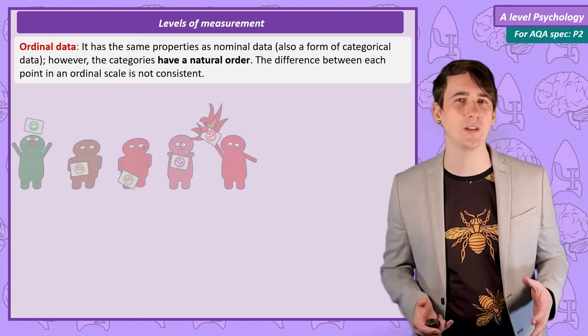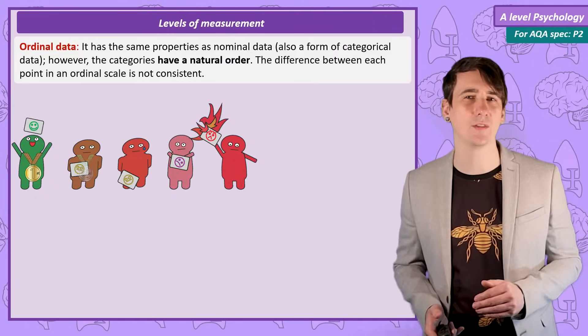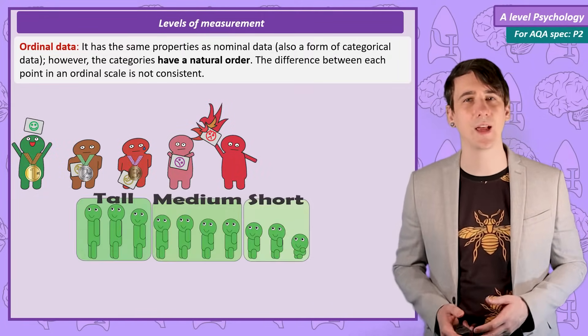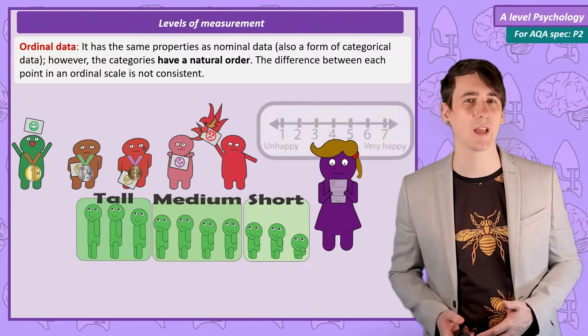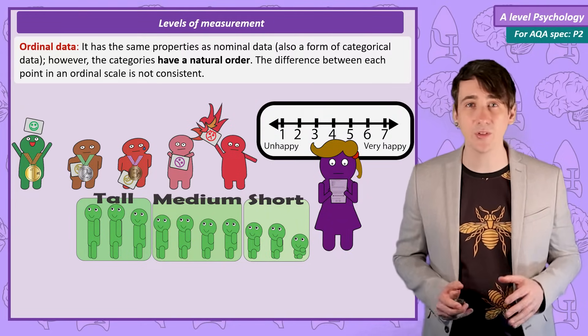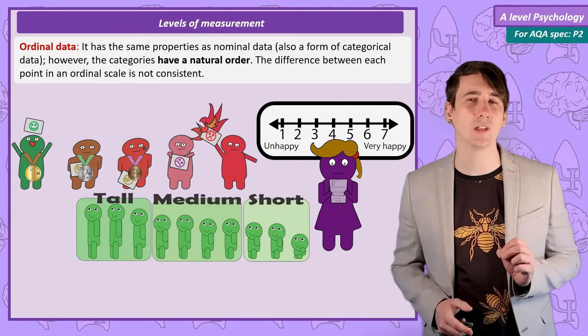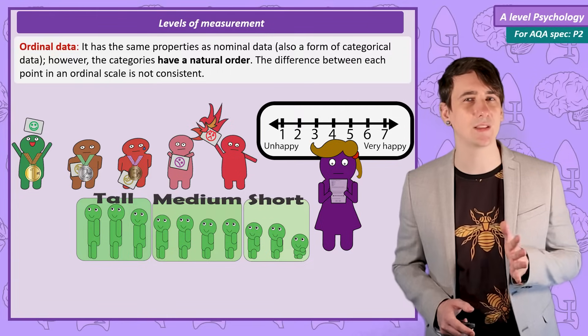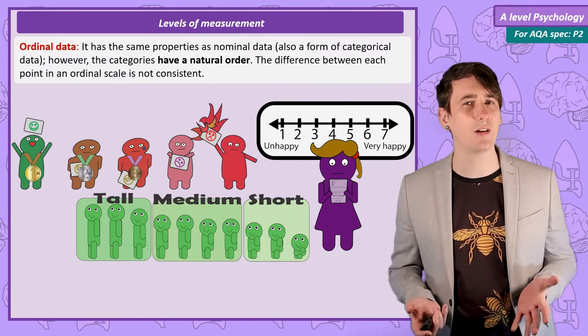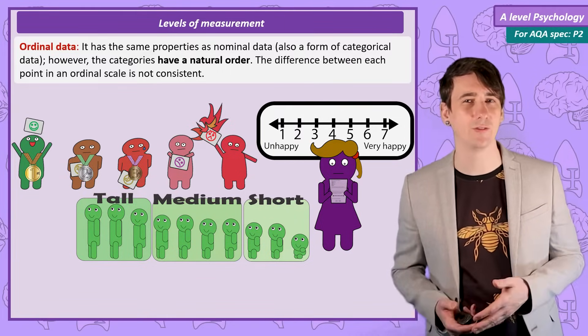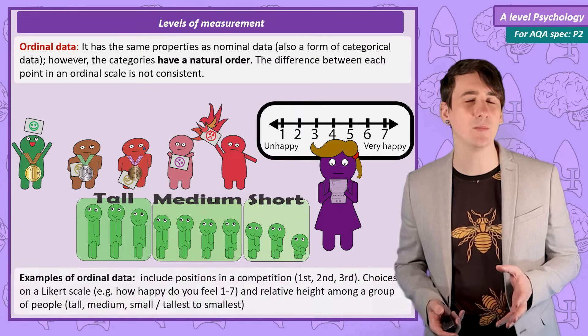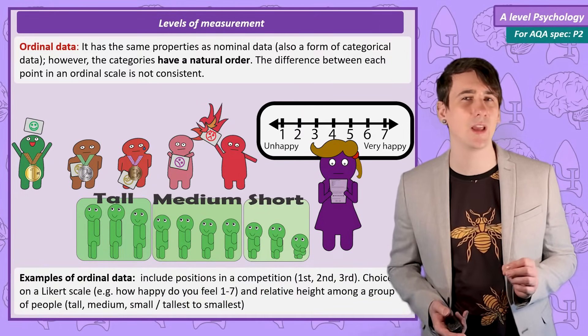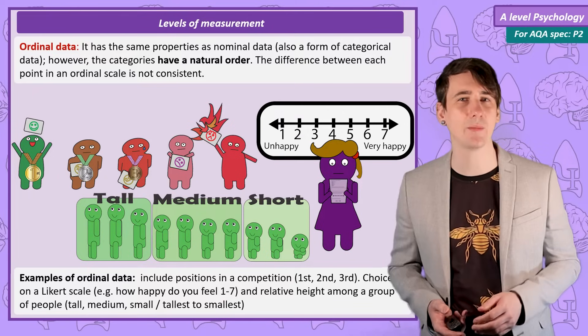Examples are positions in a writing competition, so first to fifth, height among classroom students and self-reported happiness on a Likert scale. So while we can order this data, the difference in writing quality between the best essay and the second best essay is not necessarily the same as between the fourth and fifth. Difference in height between the middle two students in the class is not the same as the two shortest members of the class.